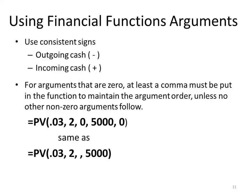When using financial function arguments, you need to use consistent signs for your dollar amounts. If you have outgoing cash, you will use a negative. If you have incoming cash, it will be positive. Outgoing cash is anything coming from your pocket and going to another entity. For example, if I have $10,000 and I'm putting it into a CD for five years, I need to enter a negative number. On the other hand, if I get a loan for $15,000, the argument will be a positive number because that money is coming to me.